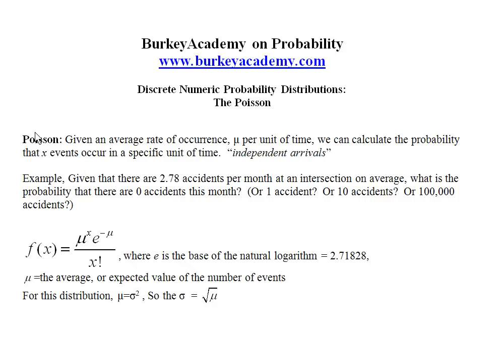All we have to know for the Poisson distribution is the average rate of occurrence, which we call mu, the average number of customers per hour over some historic data. Given that number, we can calculate the probability that X number of events will occur over some specific unit of time.